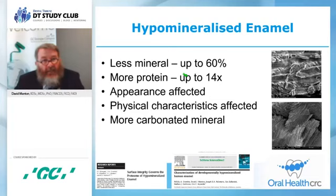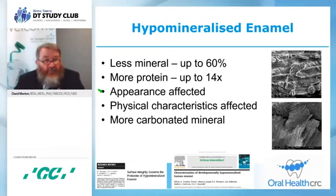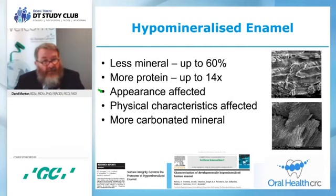Our group is looking at changing that protein content to improve bond strengths and hopefully improve mineral content with remineralizing agents. The appearance can be affected — in molar teeth, appearance is important for diagnosing severity, but in anterior teeth, especially in older children, it can become an aesthetic issue. This brings in questions about veneering with direct resin composite or bleaching the teeth to decrease lesion colour before veneering. The yellow-brown lesions tend to be more problematic, though white lesions can become a problem as well.